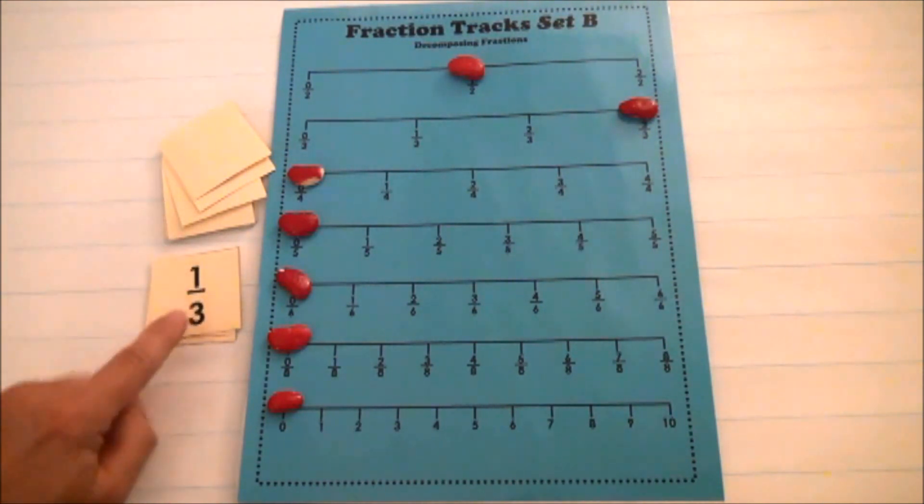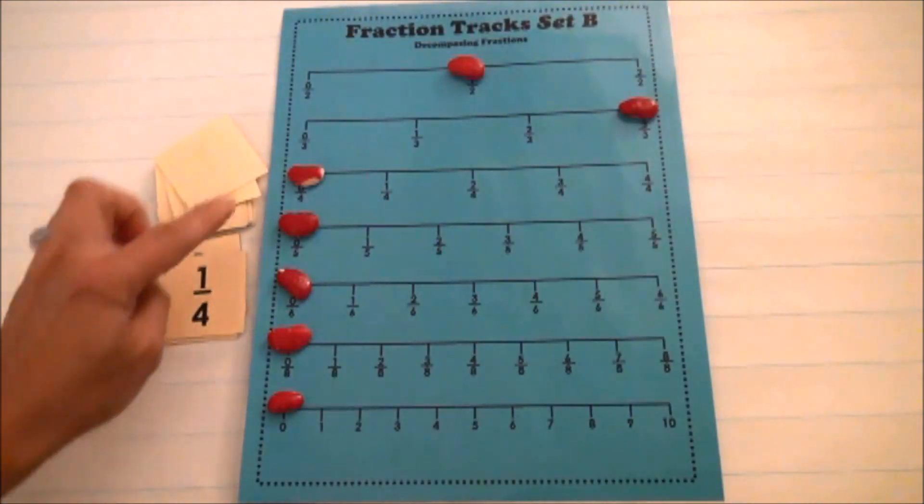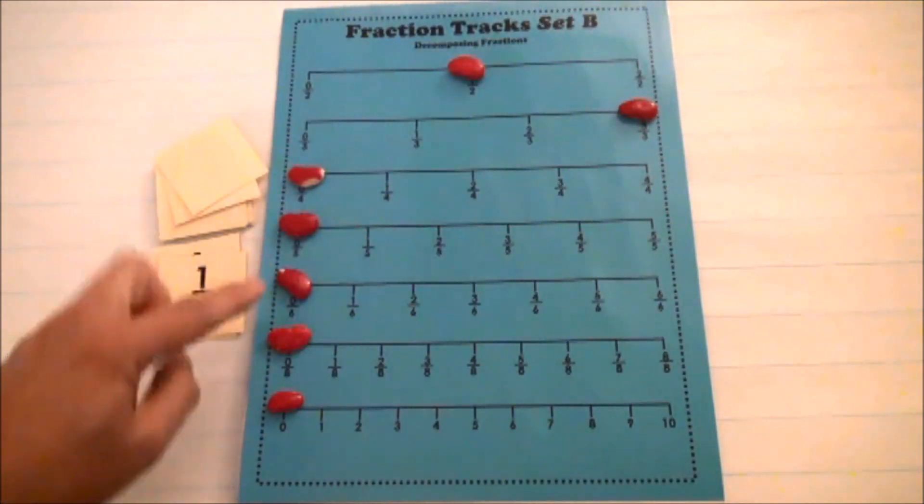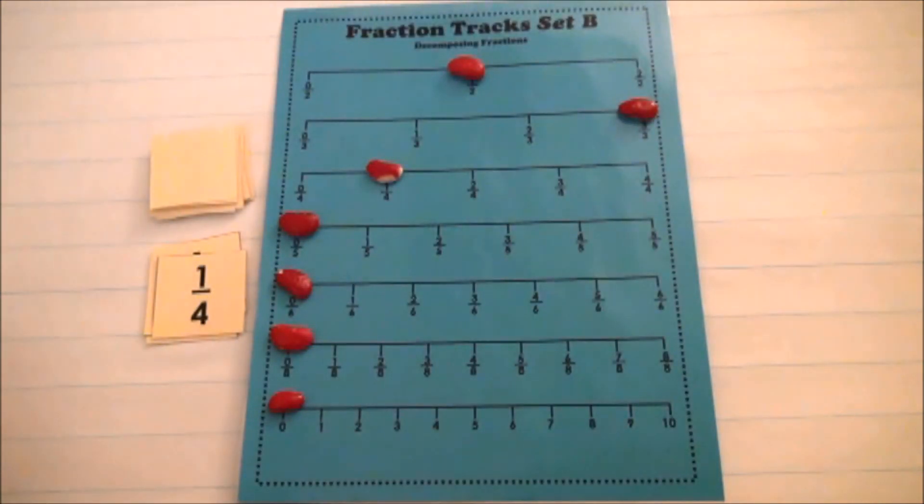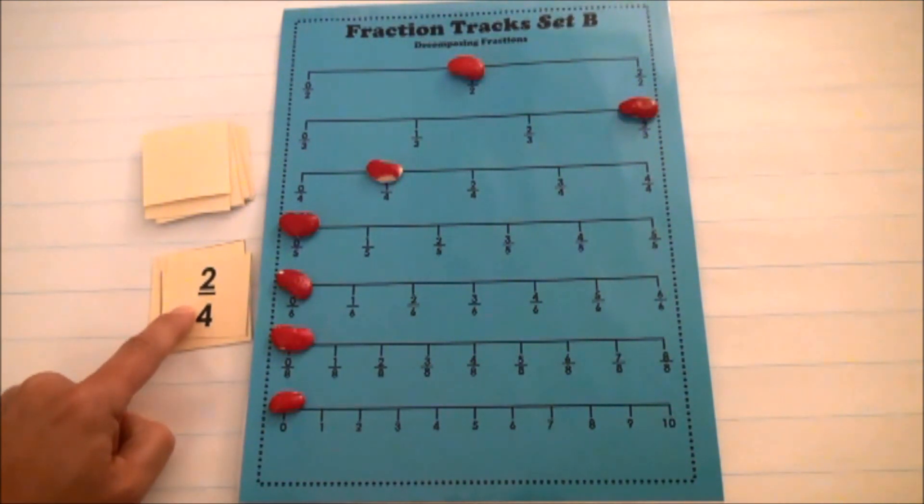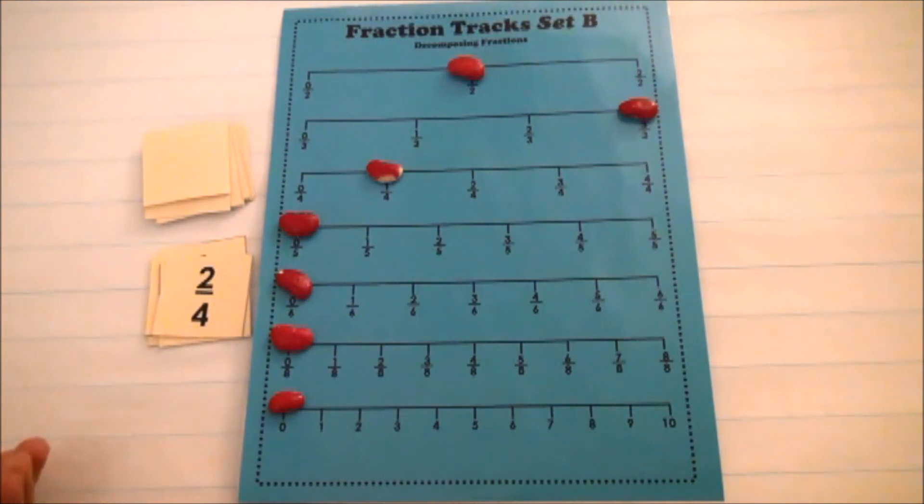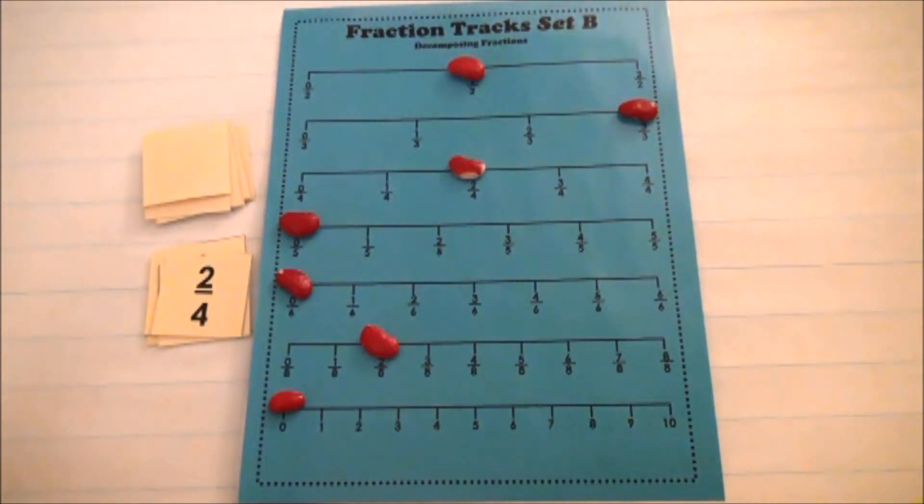After students practice a few times this way, you can introduce the rule that students can move this amount or they can move an equivalent amount. If I flip over one-fourth, I can either move one-fourth or I can move two-eighths. So, for right now, I will move one-fourth. After students are proficient playing that way, you can add the challenge level, which really is more of a fifth grade level, but students can either move this amount, an equivalent amount, or the sum of this. So I could, for example, move two-eighths and then I could move one-fourth if I was moving the sum of two-fourths.